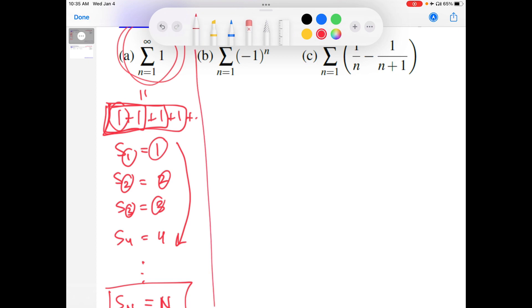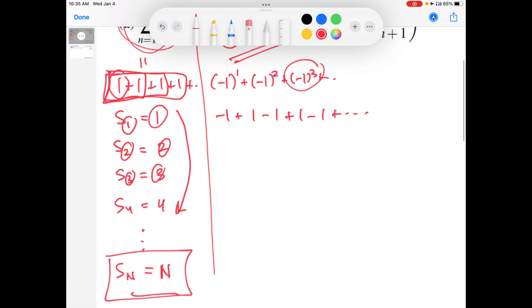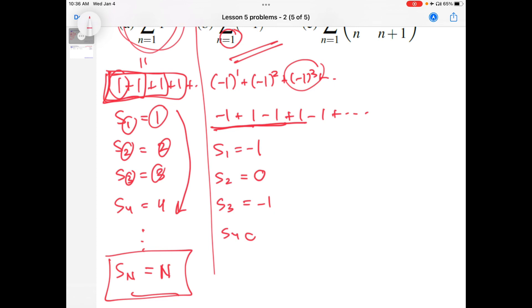We started simple. Let's ratchet up the complexity a little bit. Let's take a look at this one. We'll do the same thing. We'll write out the terms in the sequence. n is starting at one, so it's minus one to the first, minus one squared, minus one cubed, so on. Simplifying a little bit, this is minus one plus one, and this is minus one, and then we can kind of see the alternating nature of this sequence. So we'll do the same thing. S sub one is the first term. S sub two is the sum of the first two. That's zero. S sub three is the sum of the first three. That's negative one. S sub four, sum of the first four, that's zero.